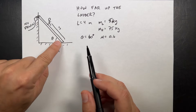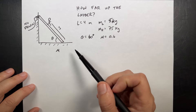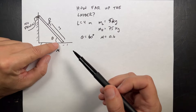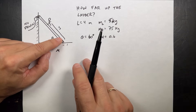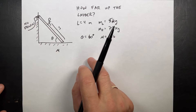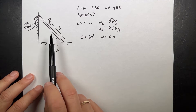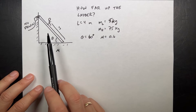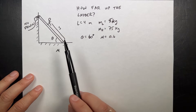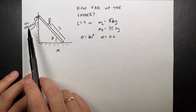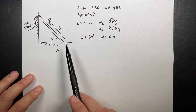I did a problem with a ladder and wanted to find the minimum angle before it falls over. Now I want to change the problem: if a person is moving up the ladder, how far can they go before the ladder slips? It might not fall over at all - they might make it to the top. I'm putting no friction on the wall, and I have the length of the ladder, mass of the ladder, mass of the human, the angle, and the coefficient of friction.